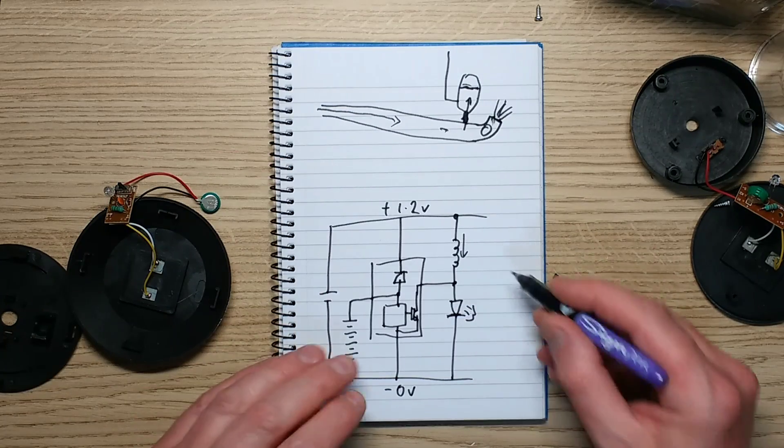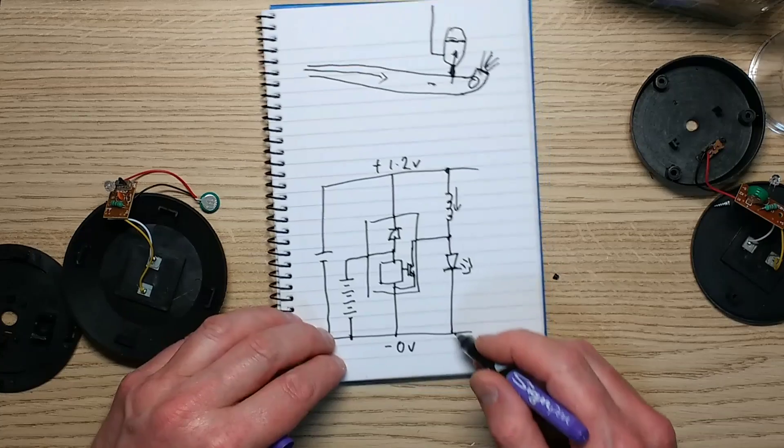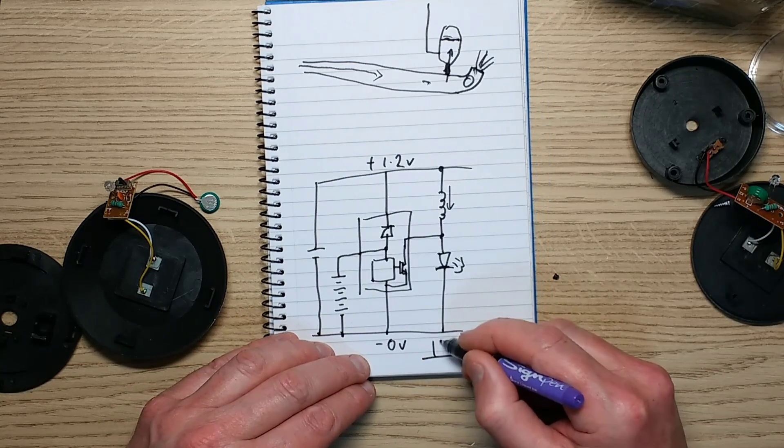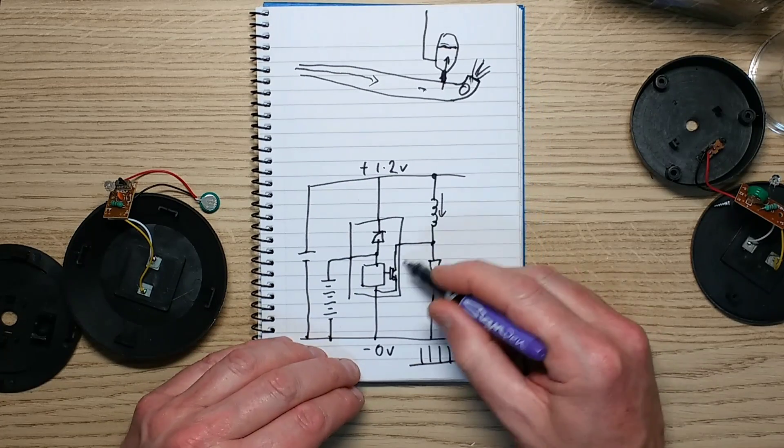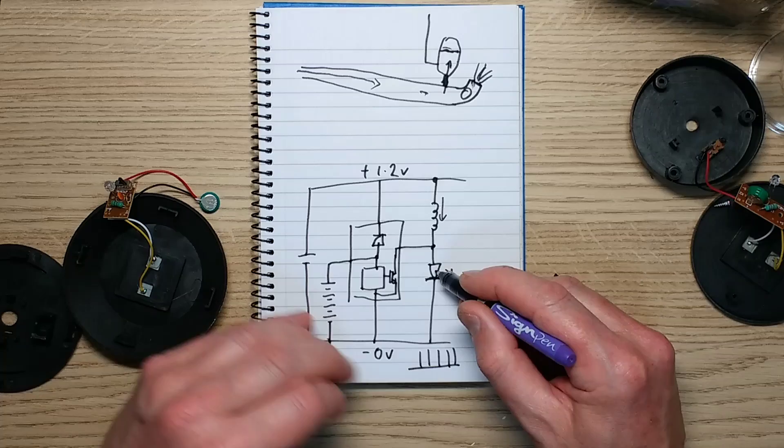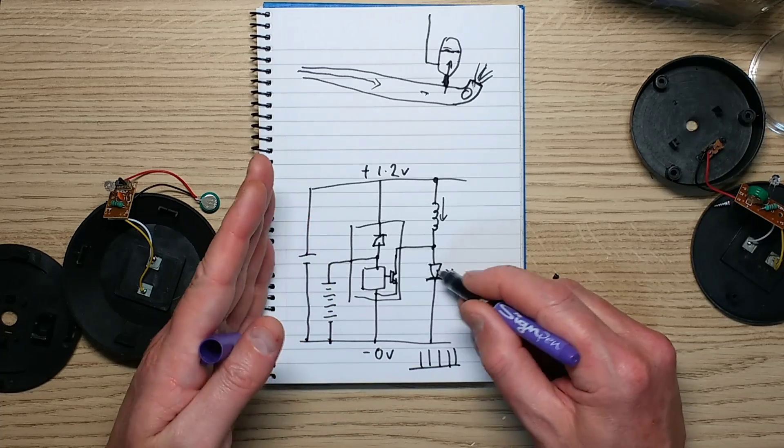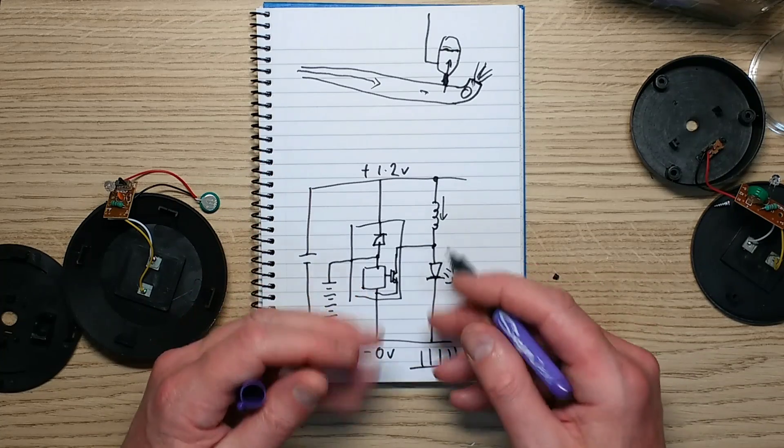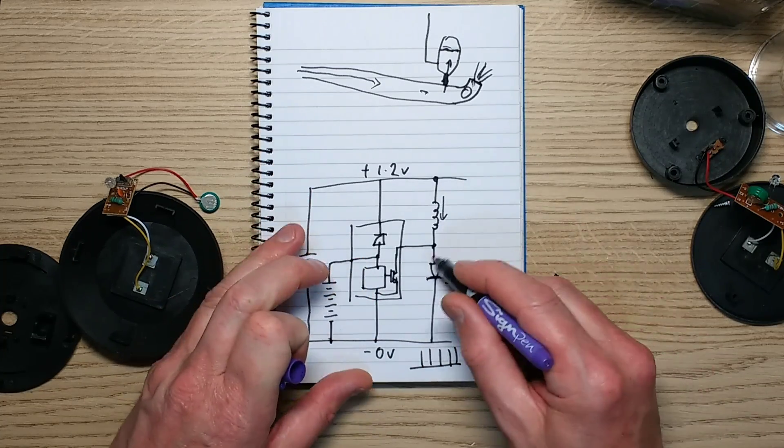However, because the output of that is effectively a series of spikes as that turns on and off, the color changing LED would just keep resetting to the red color. It wouldn't do this red green blue cycle.